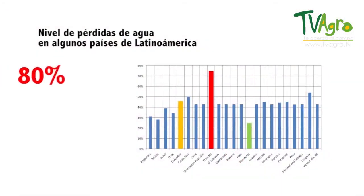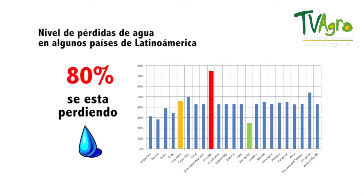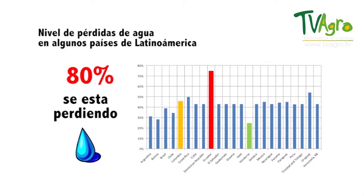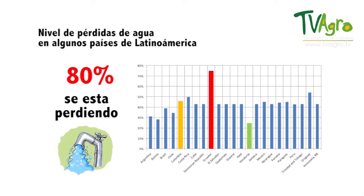Today, Latin America has losses that, in certain countries, can even reach 80%. This means that 80% of the water supplied by the water company is being wasted — 80% of the water coming out of the company, then passing through the city's infrastructure, is not reaching the final consumer. In certain companies or countries, the level is lower — we're still talking about losses of 40% to 50%.